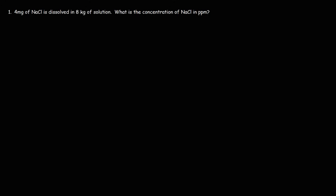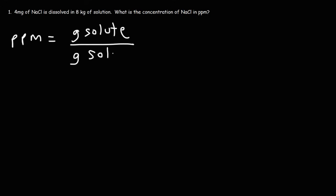In this video, we're going to work on solving problems associated with units of concentration such as ppm and ppb. ppm stands for parts per million, and ppb stands for parts per billion. In order to calculate the concentration in ppm, you need to take the mass of the solute in grams, divide it by the mass of the solution in grams, and then multiply that by 10 to the 6. ppm is a special type of concentration used for substances with a very low concentration in solution.